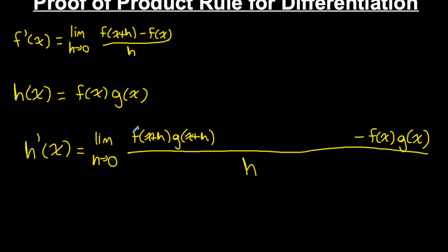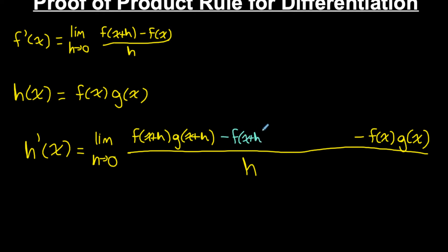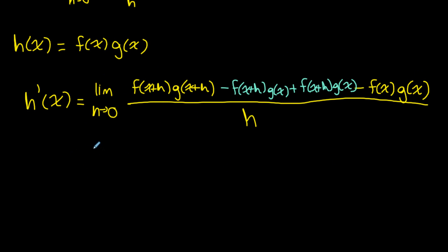I left a big space because the way it's written right now, there's nothing really to simplify. This was discovered through trial and error and manipulating equations. What I'm going to do is add zero in a fancy way — I'll rewrite zero as a plus and minus of the same thing. Specifically, I'll subtract f(x+h)·g(x) and also add f(x+h)·g(x). Since those are the same thing, I've added zero, but in a way that lets me simplify this big limit statement.